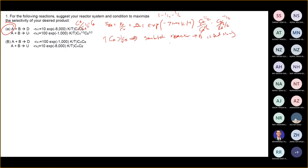So the semi-batch reactor contains A. Semi-batch means only half enters and there is no outflow. What enters is B, which we feed at a low concentration, slowly.